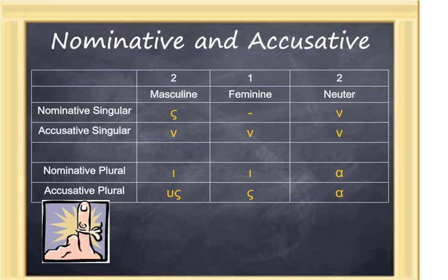In today's lesson we'll add the other two major cases. We'll discuss how the genitive and dative function and introduce the keyword for each case. Then we'll look at the case endings, the definite article, and the full paradigm. We'll also have a couple of words about noun rules and two other variations on the paradigms that you will encounter in the Greek New Testament.